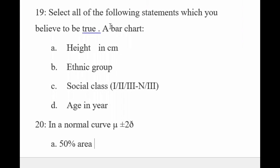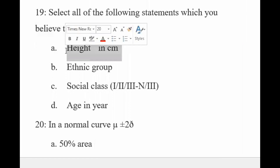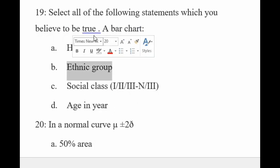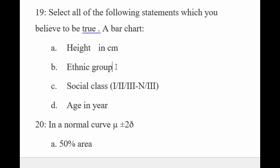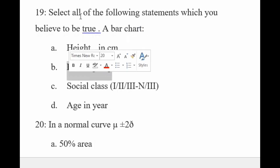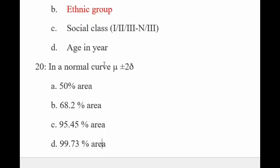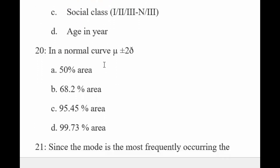Select which of the following statements you believe to be true about a bar chart. 'Height in centimeter' — yeh continuous data hai, is liye fit nahi hai. 'Social classes' — yeh bhi fit nahi hai. 'Age in years' — yeh bhi theek nahi hai kyunki yeh bhi continuous data hai. Lekin grouped categories bar chart ke liye suit karti hain — yeh sahi answer hai.